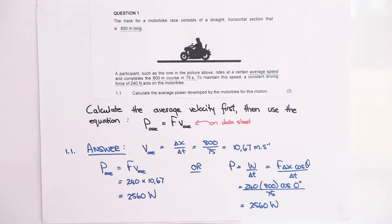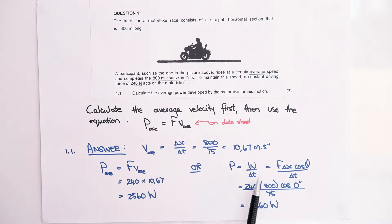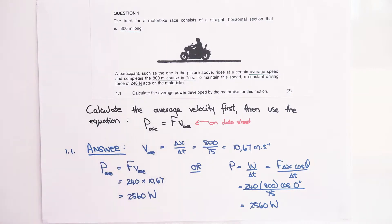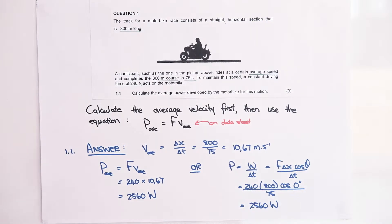Remember, power is in watts. Using the other equation — power is the rate at which work is done — we calculate work using F·Δx·cos θ. The force of the engine is 240 N, the total displacement is 800 m, and the angle between force and displacement is 0°, since both act in the same direction. The time is 75 seconds. You get exactly the same answer, so you can use either of those two equations.